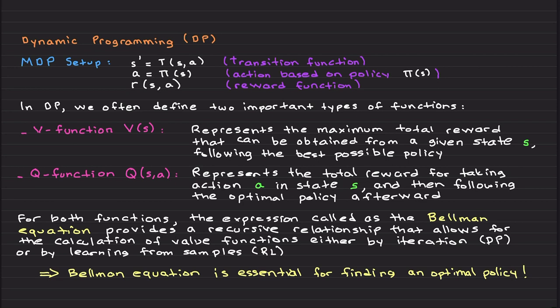These two functions are popular for different purposes we're going to discuss, and there is an expression called the Bellman equation that provides a recursive relationship that allows for the calculation of value functions either by iteration or by learning from samples.